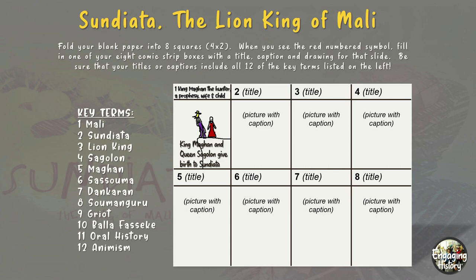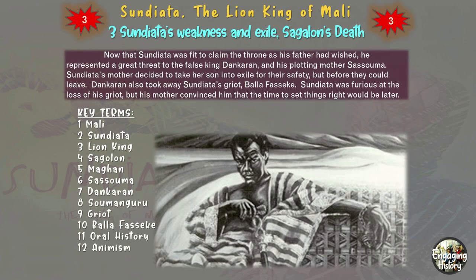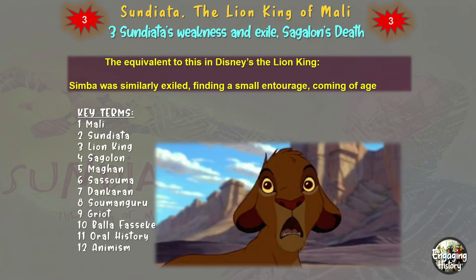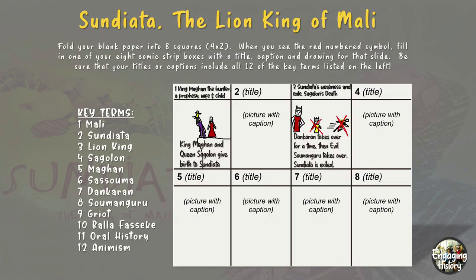Let's take a look at one more box as an example — we're going to skip to box three. There was another potential heir to the throne, Dankaran. He plotted with his mother, Sasuma, to take Sundiata out. Sundiata's griot, Bala Fasake, was taken from him. In exile, he learns to hunt and fight, and gathers people to help him. Meanwhile, back home, his brother Dankaran was overthrown by the evil Sumanguru. This compares to Disney's The Lion King, where Simba was also exiled and found people to help him. In my picture, Sundiata flees, Dankaran takes over, Dankaran gets crossed out, and Sumanguru takes over. Repeating this pattern for the next several boxes, students will have completed the story of Sundiata, the Lion King of Mali, and compared plot elements and characters each step of the way to Disney's The Lion King.